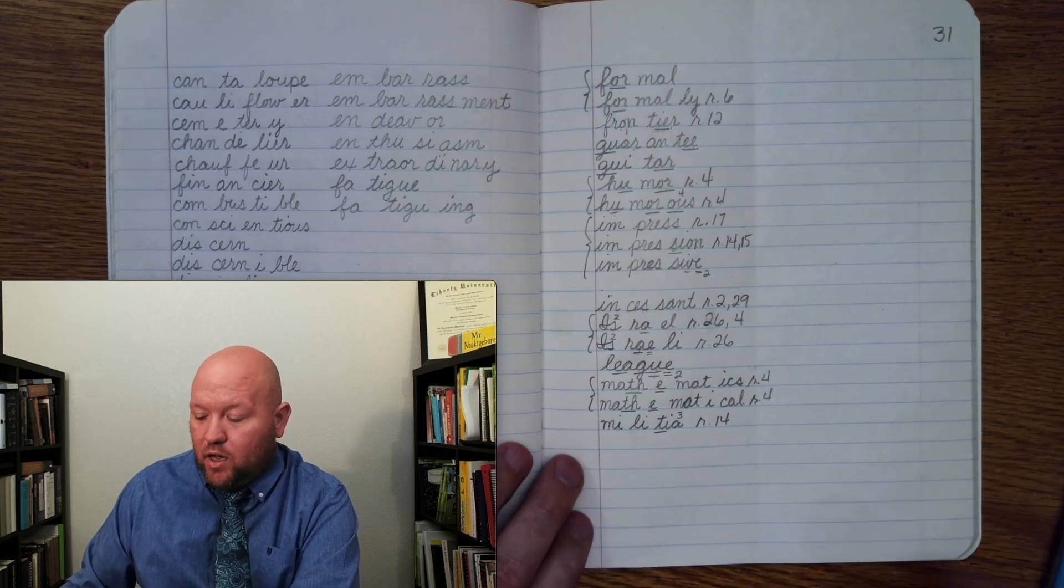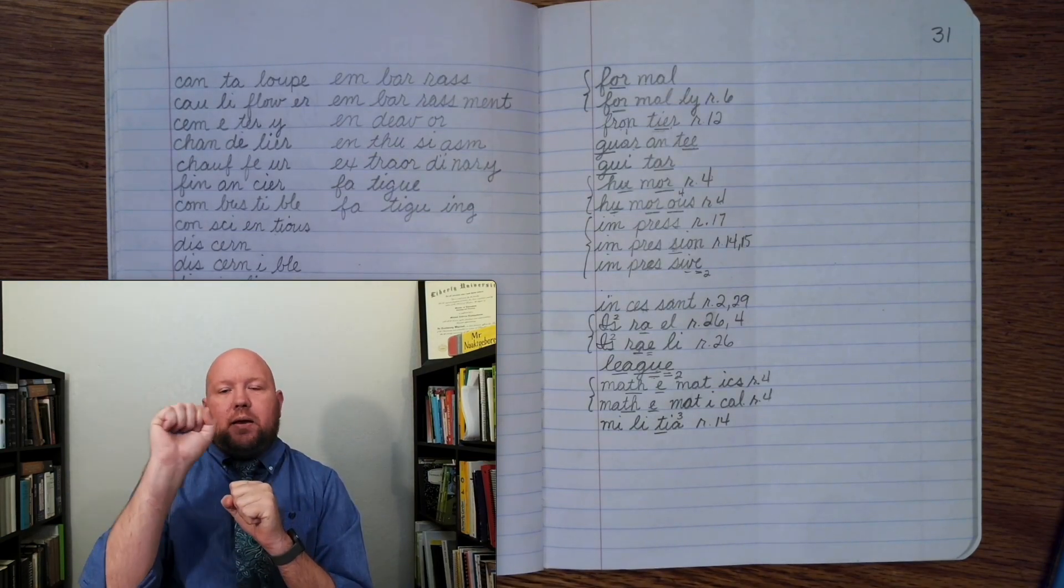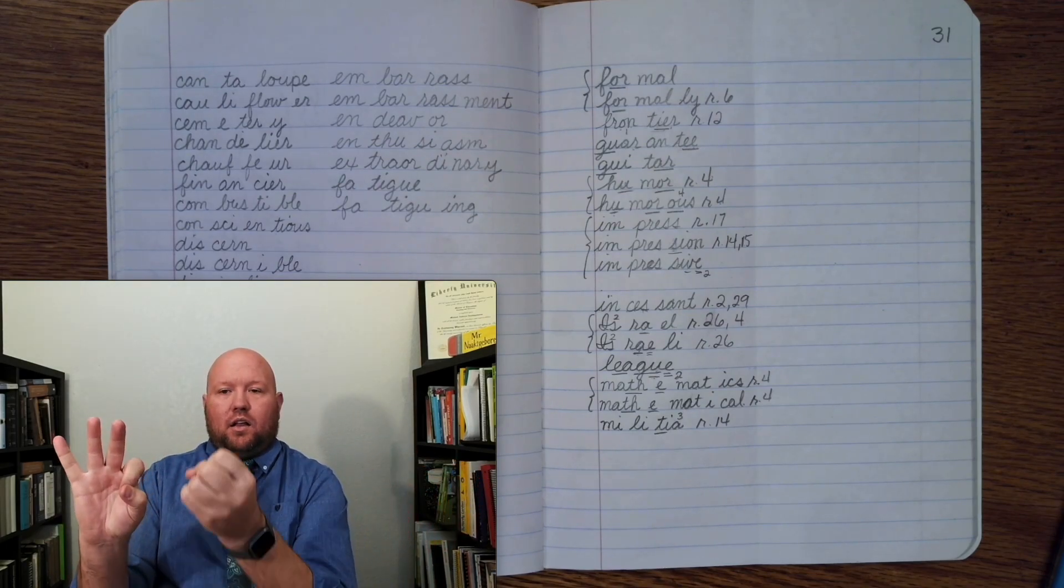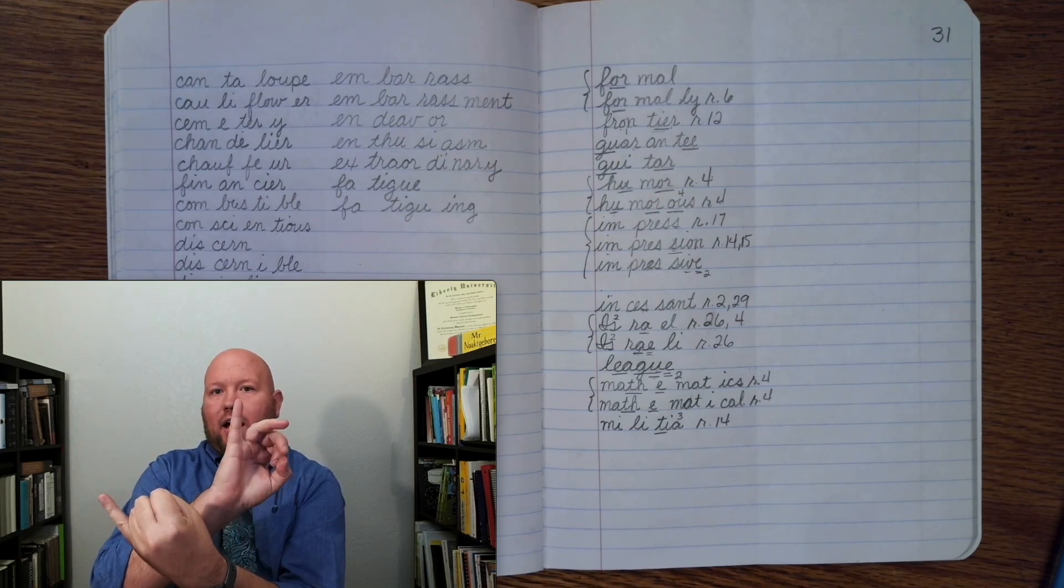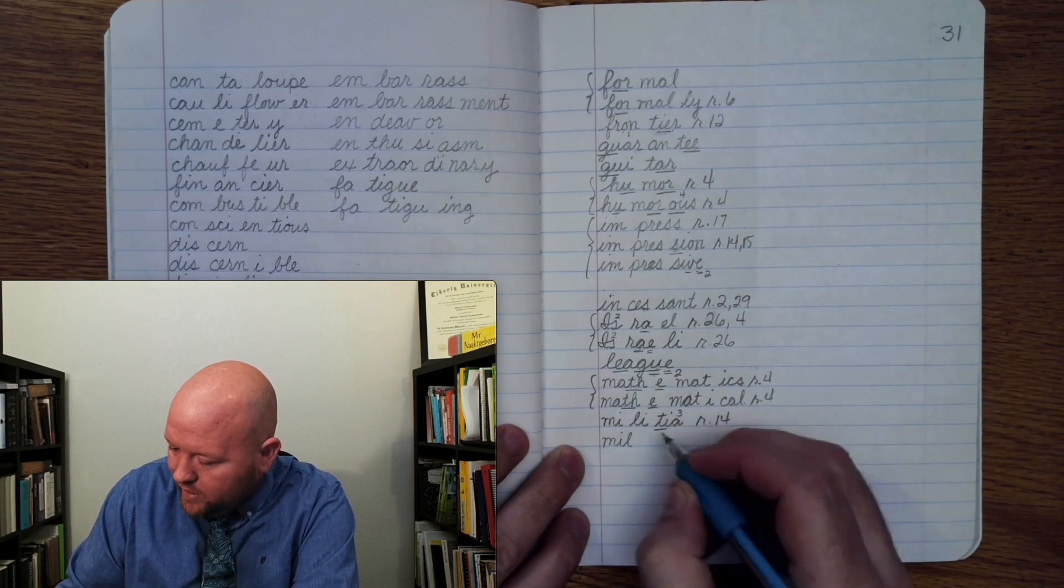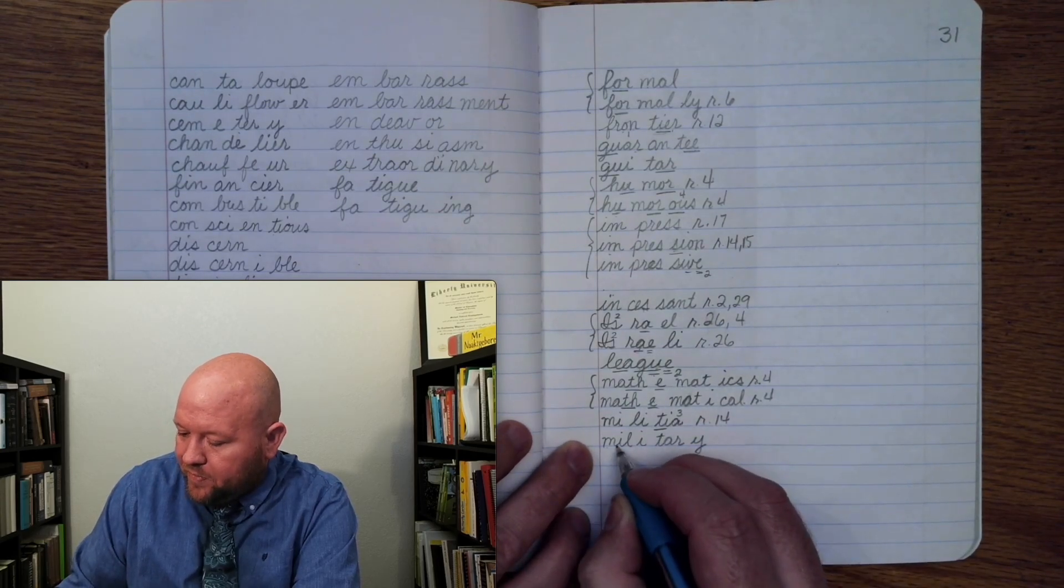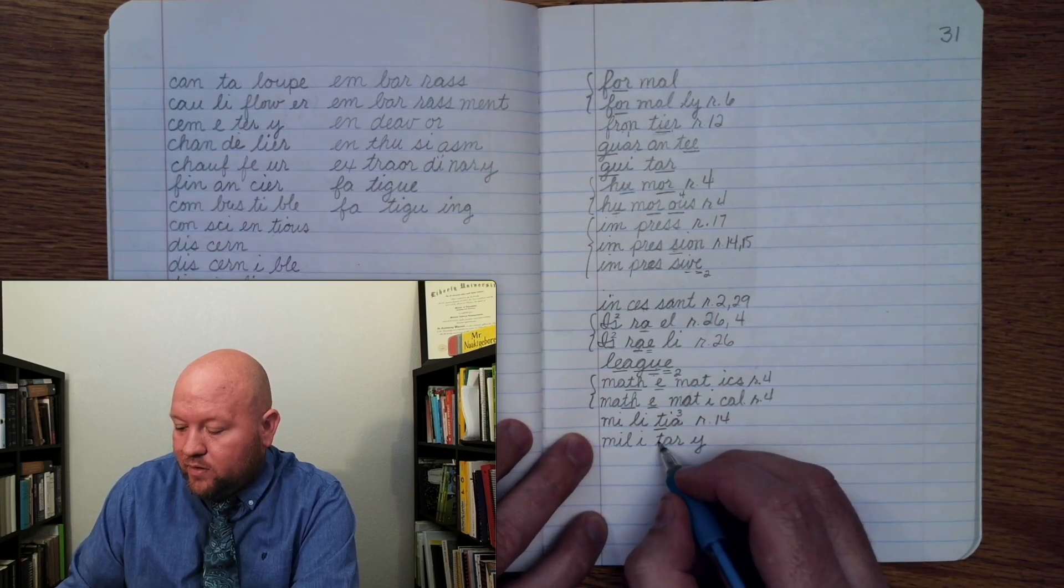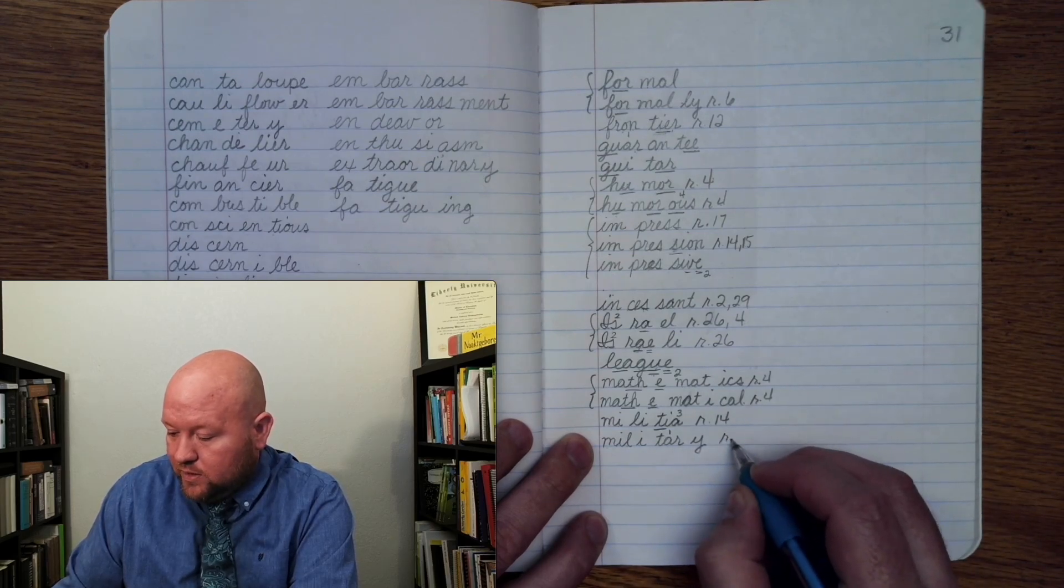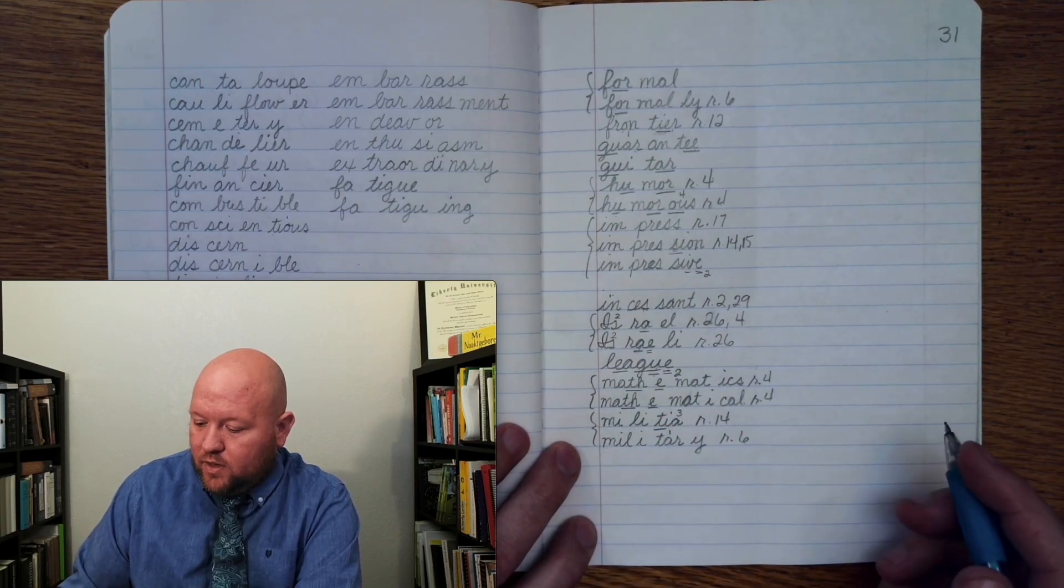So, the next word is military. We're going to treat military just as its own base word. Military. Base word. Military. Mil-i-tar-i. M-i-l. Military. Military. Mil-i-tar-i. M-i-l. L-i-t-a-one-er. I-r-i-rule six. Military. Phrase those. All right.